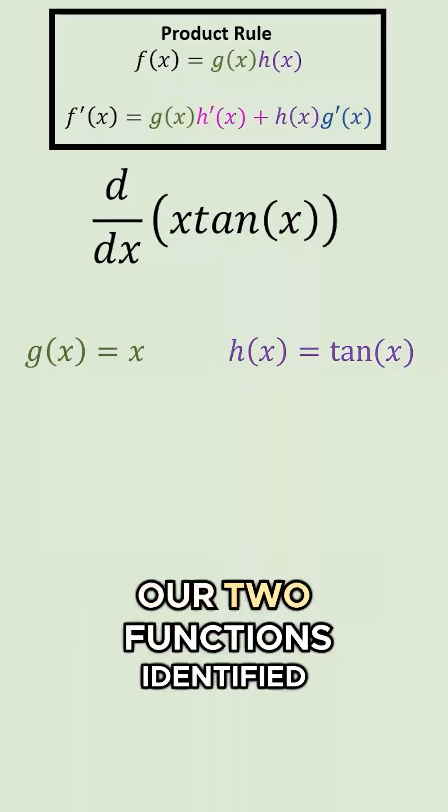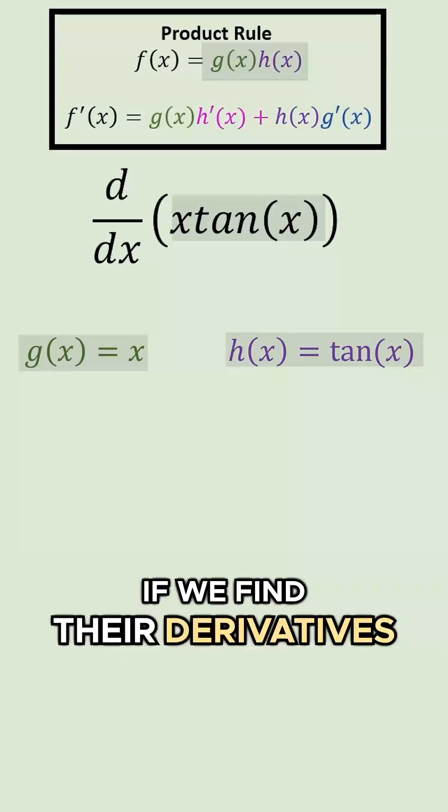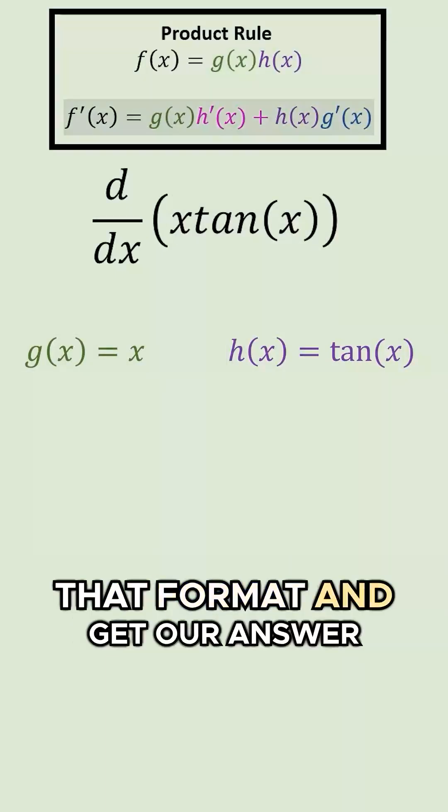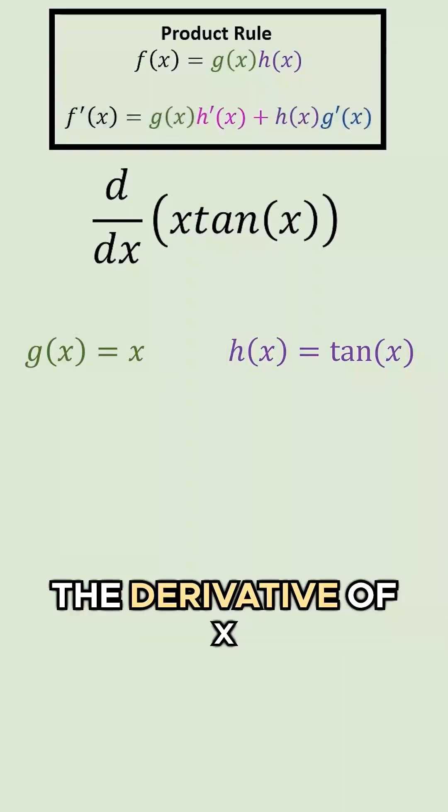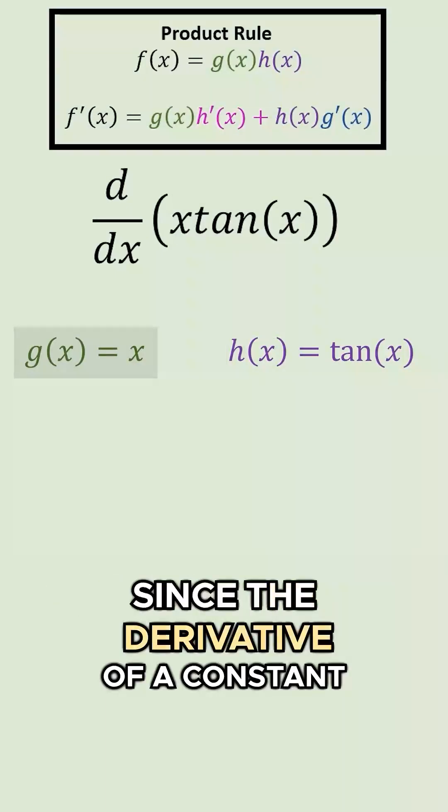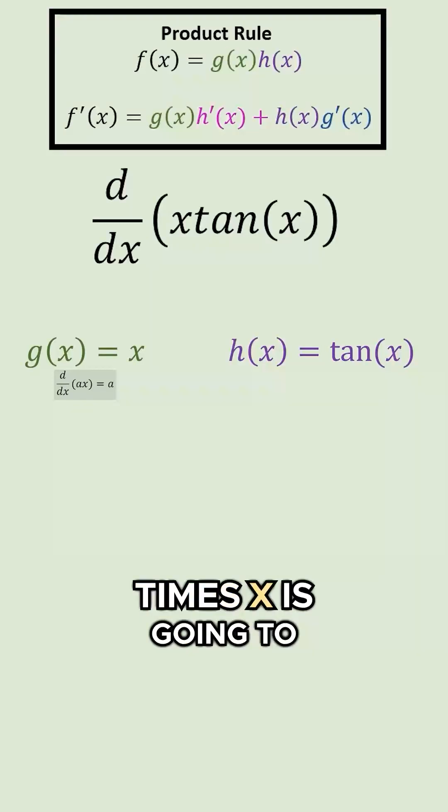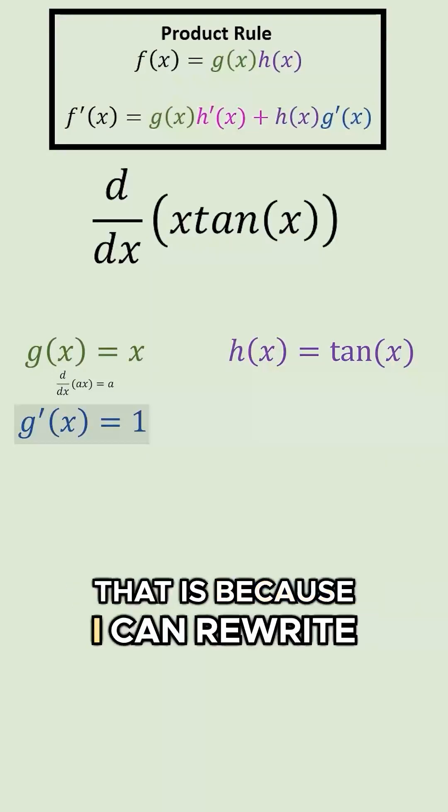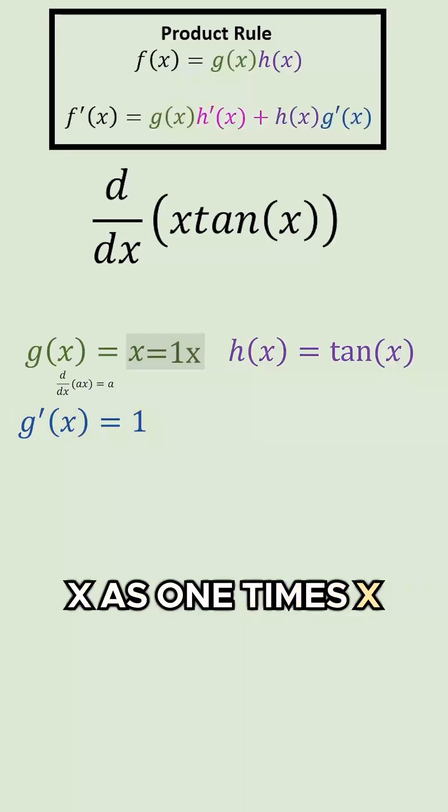Now that we have our two functions identified, if we find their derivatives, we can just plug them into that format and get our answer. The derivative of x, since the derivative of a constant times x is going to be equal to the constant, is going to be 1. That is because I can rewrite x as 1 times x. So, the derivative of 1x is 1.